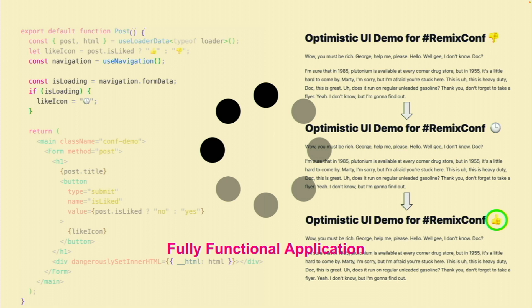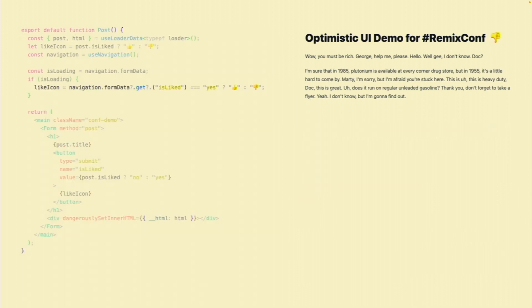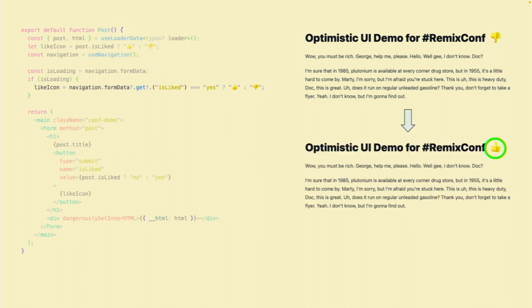So now we're going to integrate Optimistic UI in this code. As you can see, if we are loading, we just get the data that we sent to the server and display the final result. So now you click this and you see the end result immediately — you don't need to wait. If you use this, the application feels way smoother than if you don't. It's very easy to integrate, and if you don't like it, you can just go back to the previous state.